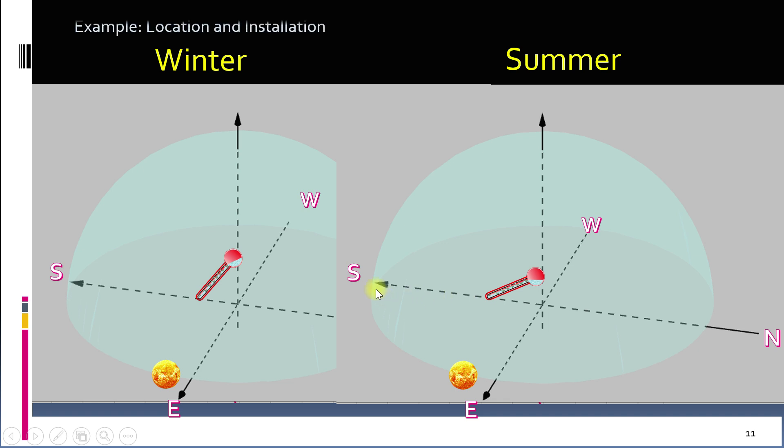Let's take an example. For Ludhiana, the latitude is 30.9 degrees. Let's round it off to 30 degrees. For winter, the angle will be 30 plus 15, that is 45 degrees. For summer, the angle will be 30 minus 15, that is 15 degrees. And the year-round angle will be 30 plus 5, 35 degrees.